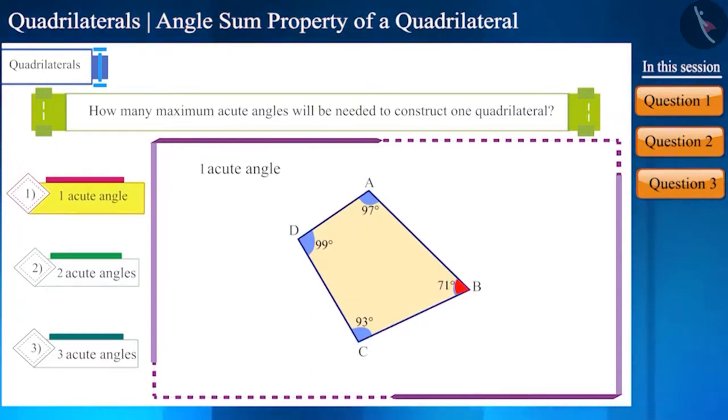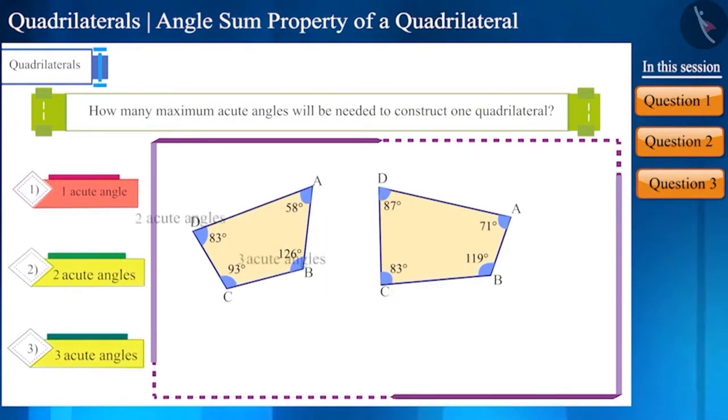Let's take the first option and take a group of four angles such that there is only one acute angle. We can see that the construction of a quadrilateral is possible here. Similarly, for the remaining two options also, let's create a group of angles with two and three acute angles respectively. You can still see that the construction of a quadrilateral is possible.